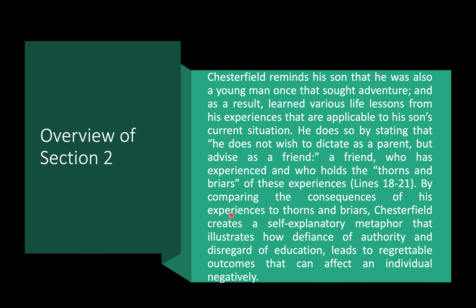The overview of section two: he reminds his son that he was also young and wanted adventure, and that at some point he also didn't want to listen to his father. But it's important that he listens because the father wants the best for his son — to avoid the thorns and briars of those experiences. By comparing the consequences of his experiences, Chesterfield creates a self-explanatory metaphor illustrating how defiance of authority and disregard of education leads to regrettable outcomes that can affect an individual negatively.